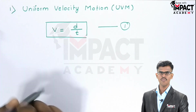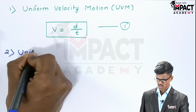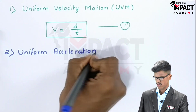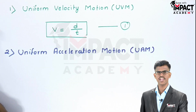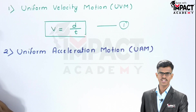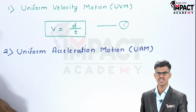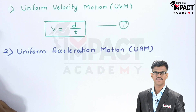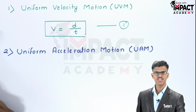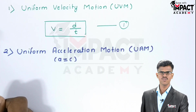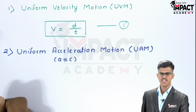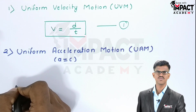Our second type is uniform acceleration motion. In uniform acceleration motion, the rate of change of velocity is constant. The velocity changes with time at a constant rate — that is, acceleration is constant. In uniform acceleration motion, we use Newton's motion equations.